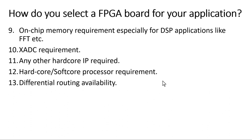The thirteenth point is differential routing availability. Each FPGA device has many general-purpose IOs, and a pair of single-ended IOs can act as a differential signal pair. However, this is only possible if differential routing is available on the board. If differential routing is not available on the FPGA board, even if the FPGA device supports differential signals, you cannot use that pair of single-ended IOs as a differential signal. Differential routing is a must to utilize single-ended IO pairs as differential signals.